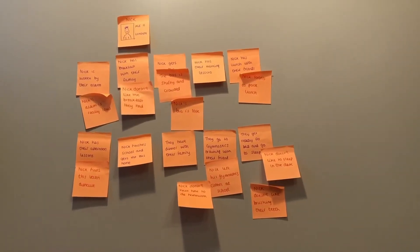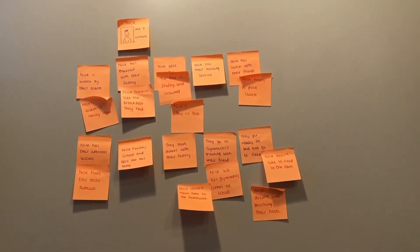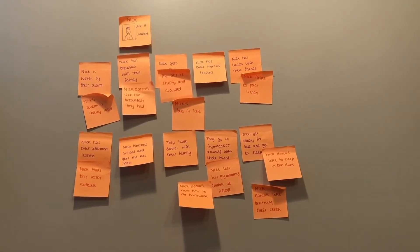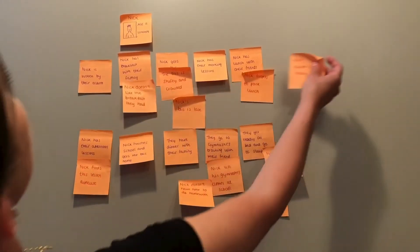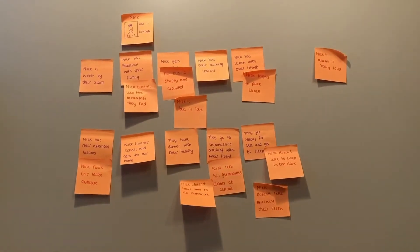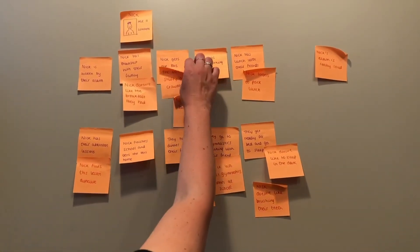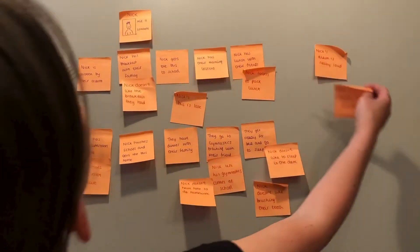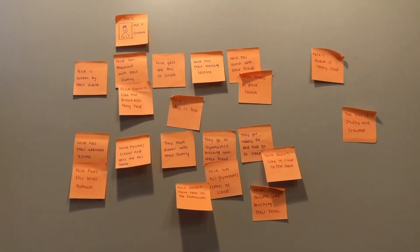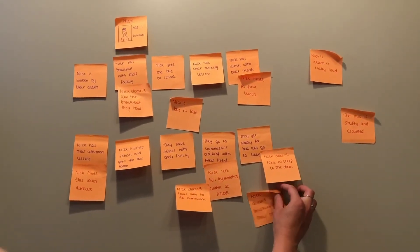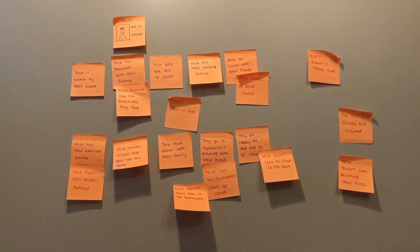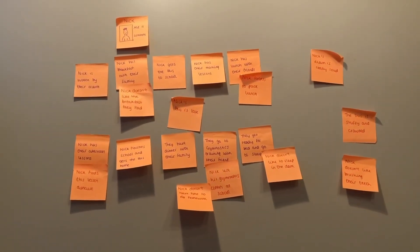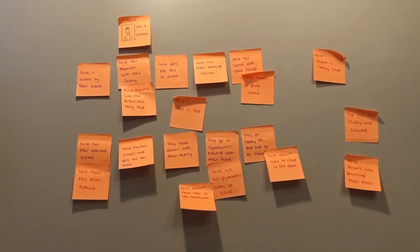Now that we know all the potential problems our persona is facing, it's time to start deciding which problems are the most important. From your large group of post-it notes, we want to start picking out the problems that we think we should tackle. We aren't going to solve them yet, but we are going to pick out the three problems that are the most interesting and have the biggest impact on our persona's happiness. We recommend not going for the easiest problems, because it's always a lot more fun when you push yourself.